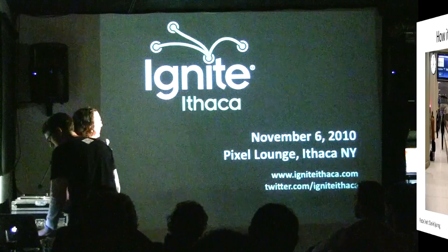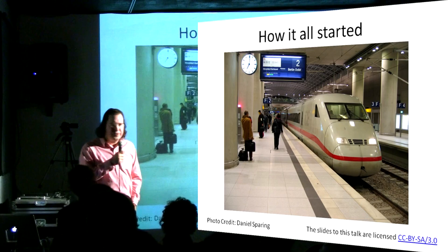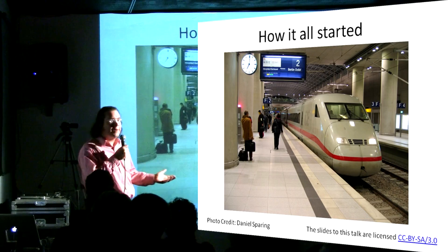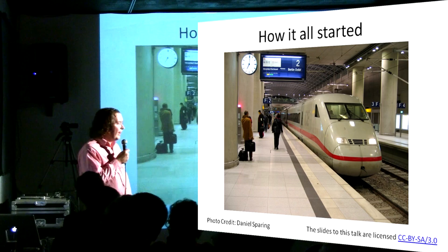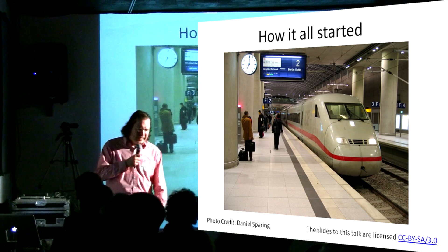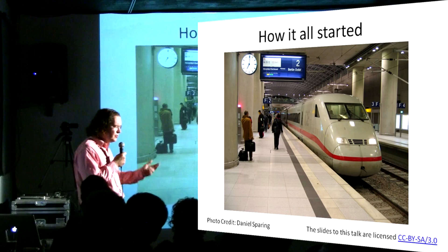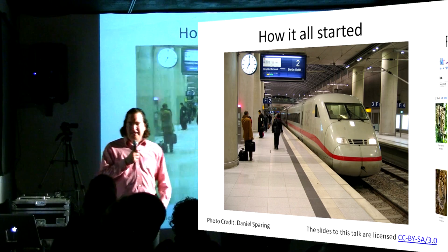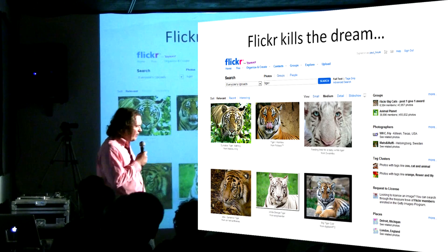Hello, I'm going to tell you about a startup I'm involved with called Ontology 2. It all really started about 10 years ago when my wife and I were living in Germany and we were traveling around, going to zoos, taking pictures of animals, and thinking we had pictures of every kind of animal you see in a zoo. We wanted to put it all together and make a well-organized website.